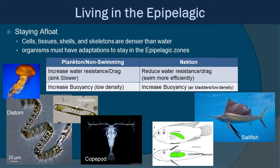Living in the epipelagic means you need adaptations to stay there. Most organisms are made of cells, tissue, shells, and skeletons — all more dense than water — meaning they're going to sink. Plankton or non-swimming organisms have a couple of ways to counteract this. One is by increasing water resistance or drag, essentially making them sink slower. The diatoms in the image have little stringy extensions that increase surface area to slow sinking. The copepod also has long antennas with little spurs to increase surface area and resist sinking quickly.